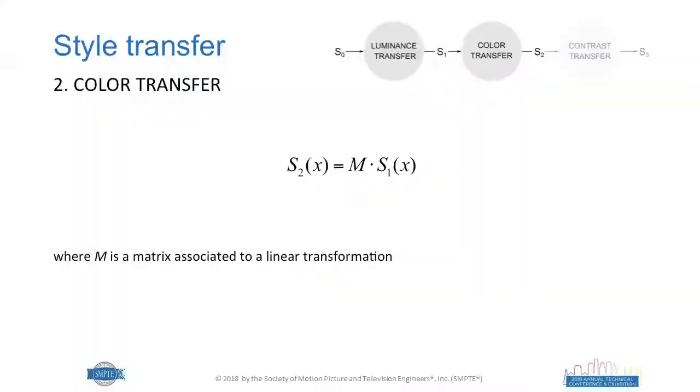There is one small difference from classical statistical PCA approaches: we apply this only to the second and third axes, because on the first axis the luminance information is kept — and we don't want to modify that, since luminance is handled in the first and third steps of our method. This transformation is done with a matrix multiplication: each pixel of the original image is multiplied by a 4×4 matrix to get the resulting image from the color transfer step, which we call S2.